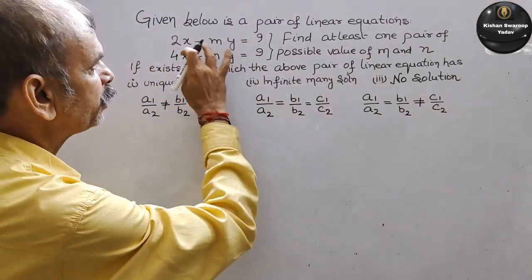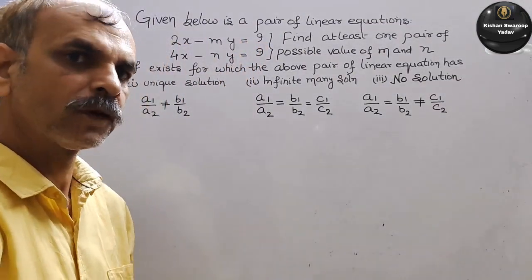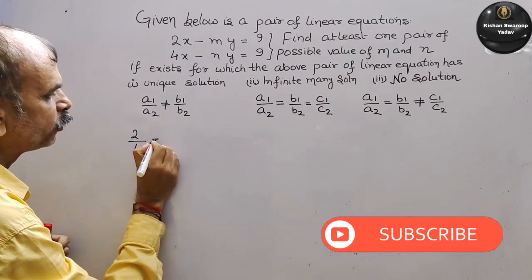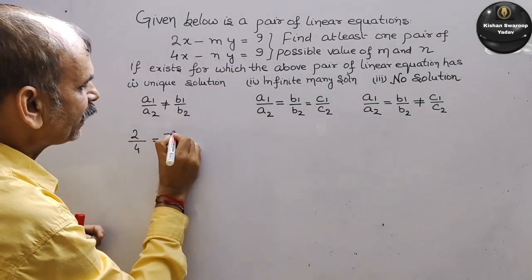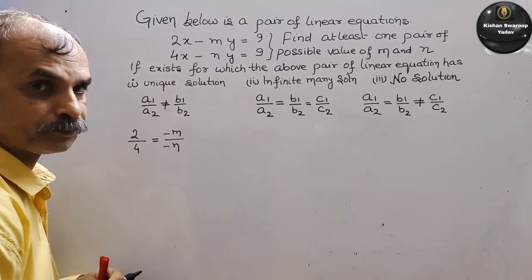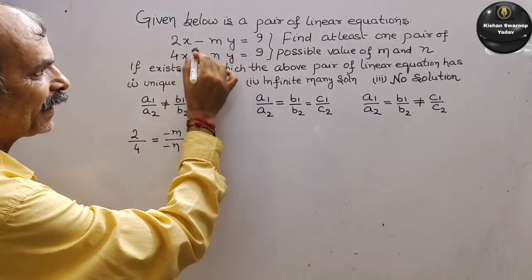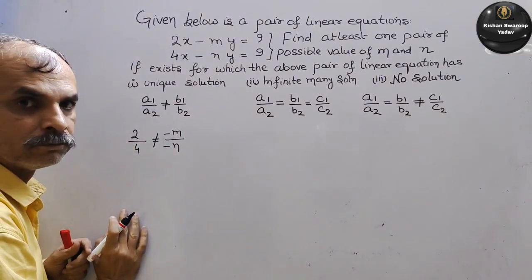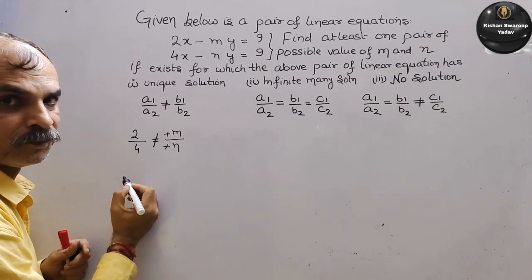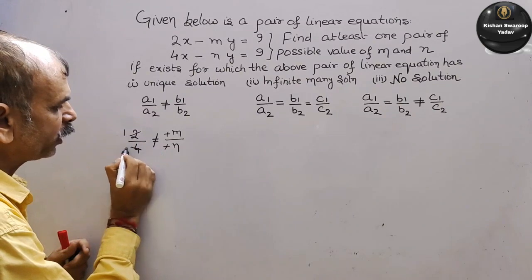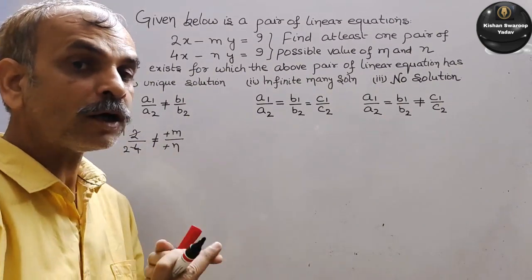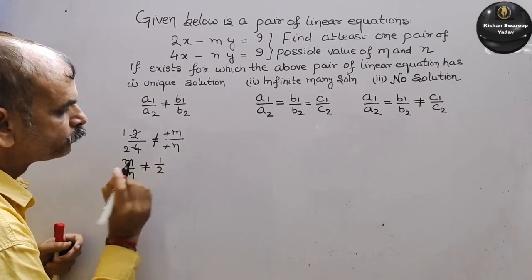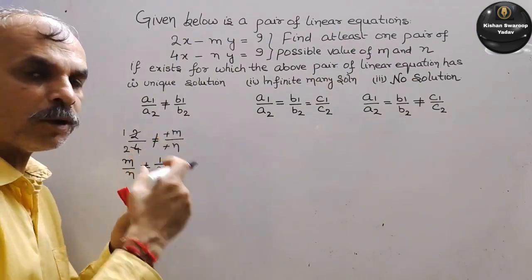तो इसके हिसाब से आपको M और N निकालना है। यहाँ पर है 2 by 4 is equal to minus M by minus N। minus और minus cancel। तो यह हो गया 1 by 2। That means M by N should not be equal to 1 by 2.